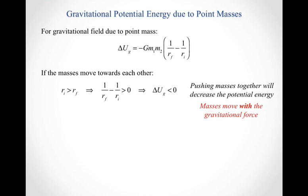This means pushing your masses together decreases the potential energy. But that's consistent with what we said conceptually: in pushing them together, they're moving in the direction the gravitational force is also pulling on them. So your masses are moving with the gravitational force, so we expect a decrease in gravitational potential energy — and that's exactly what our equation gives us.